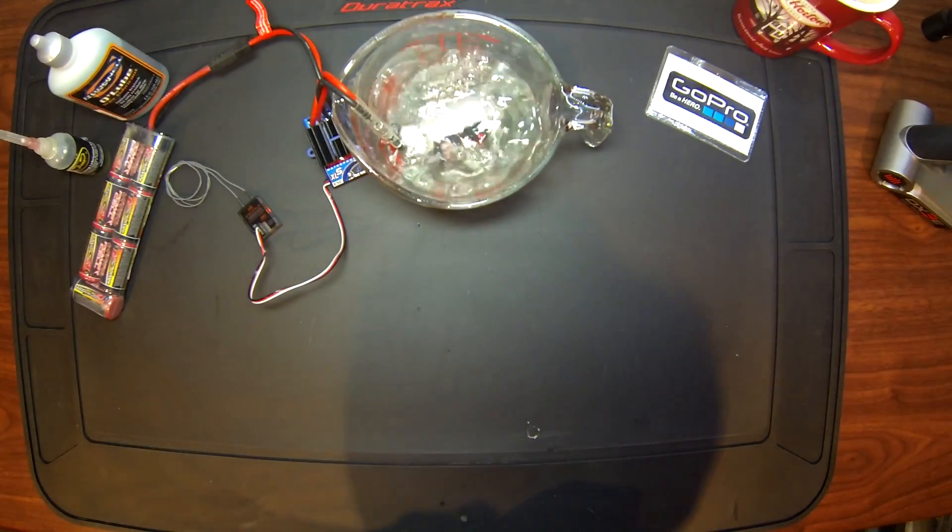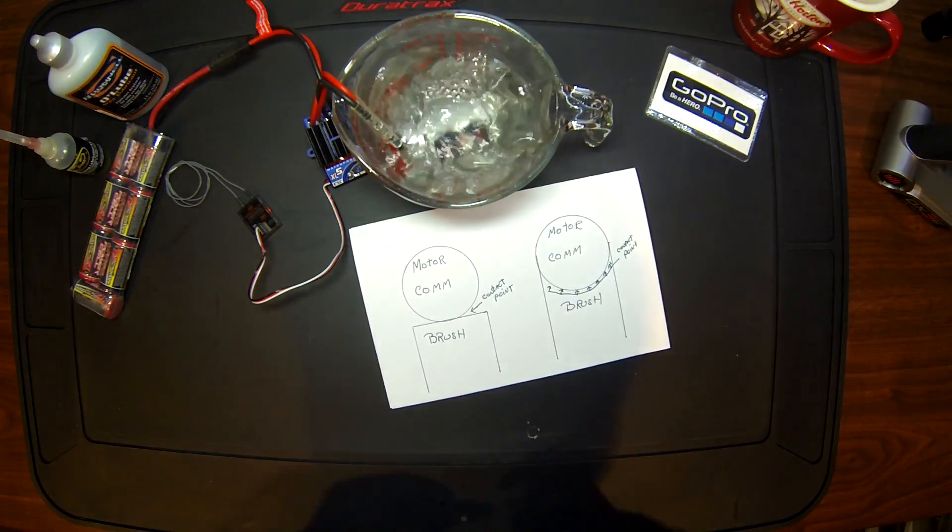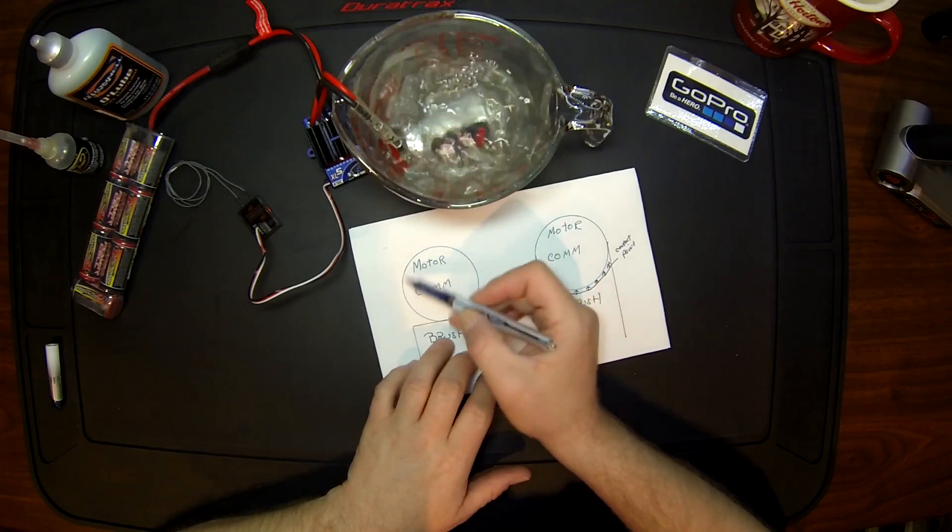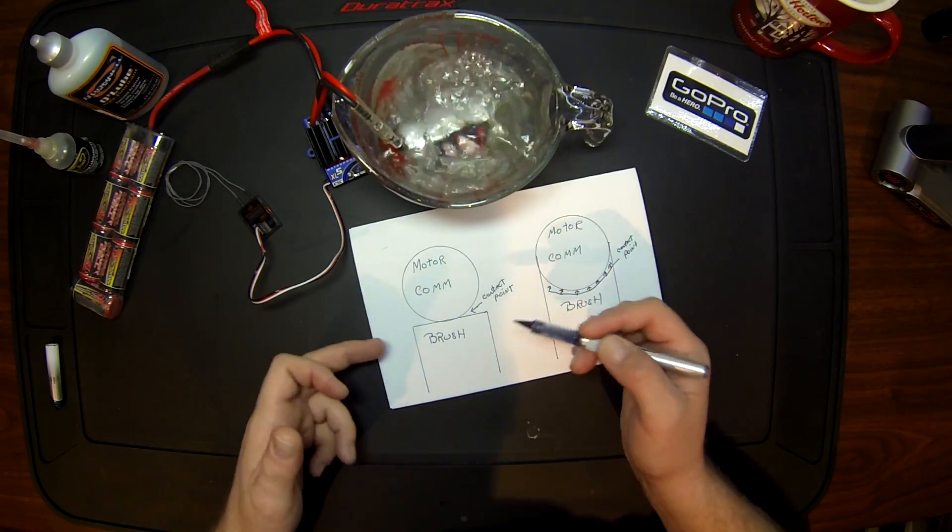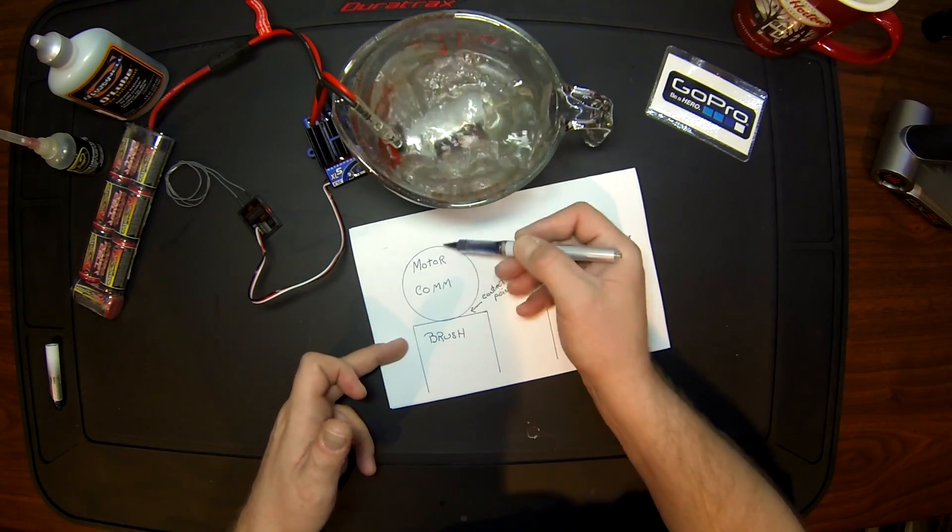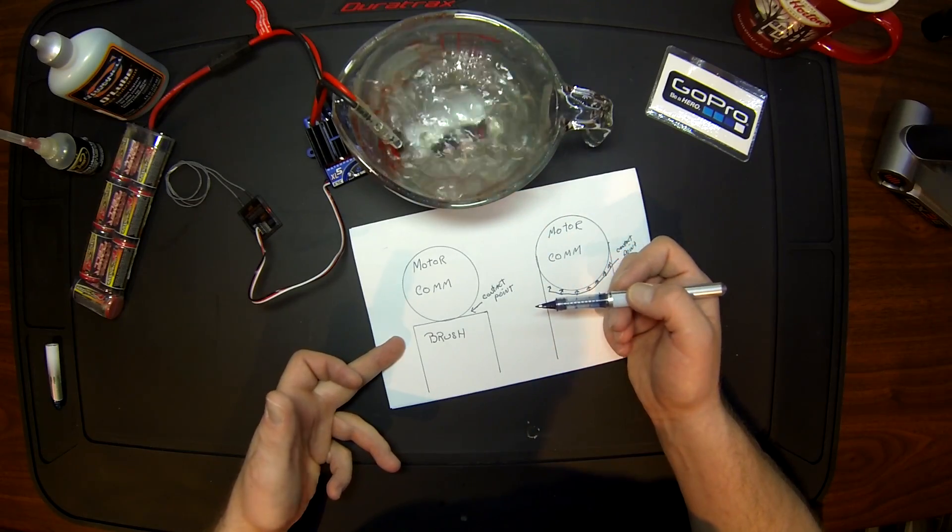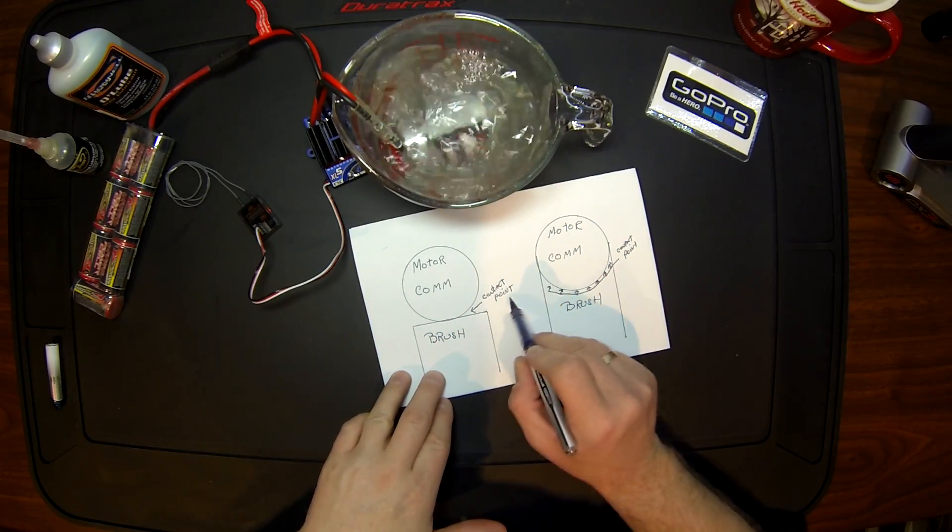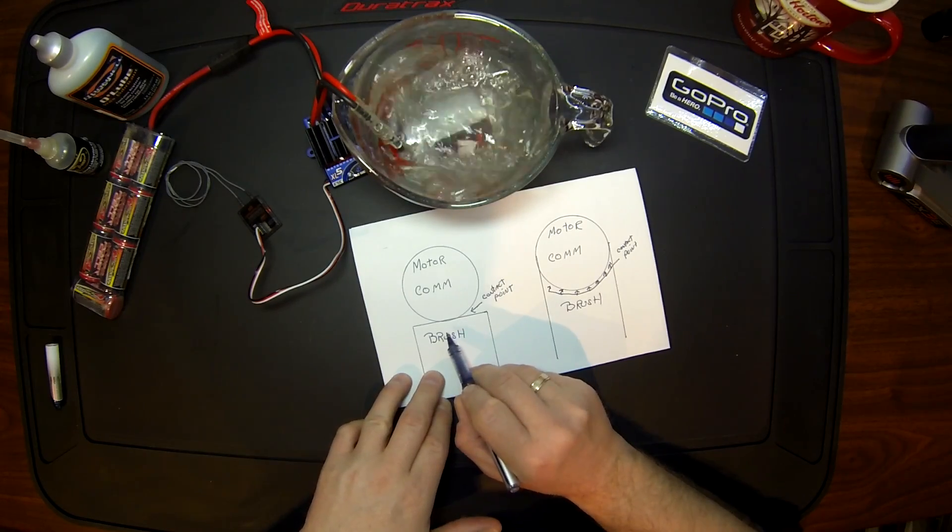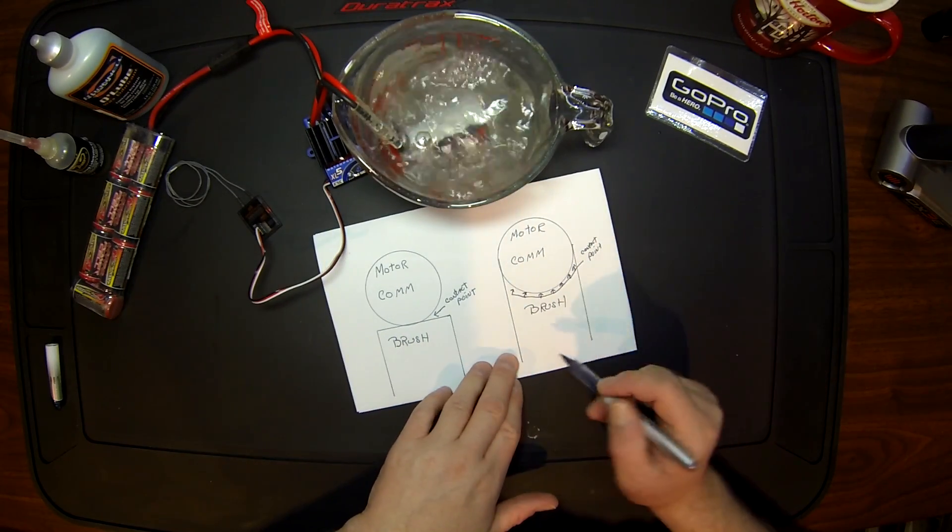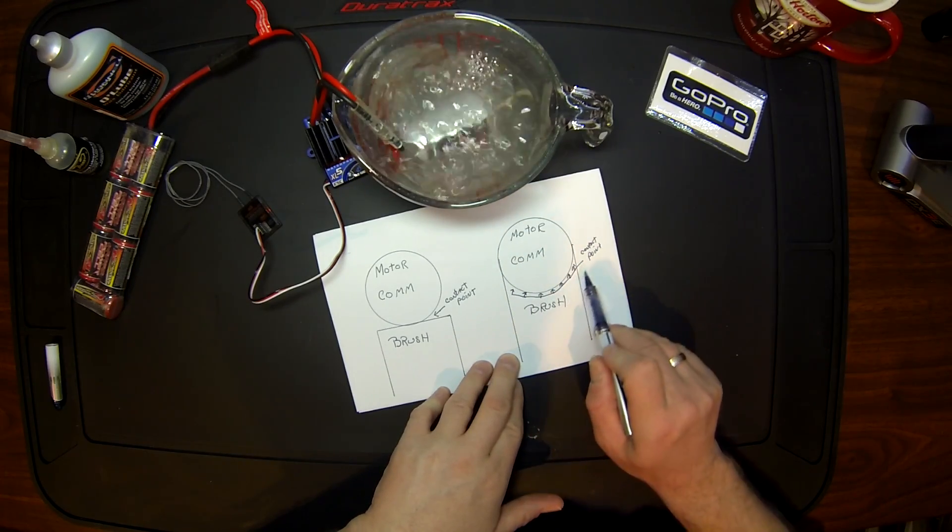To explain why you do a break-in, very easy. Here you have your motor comm, your main shaft of your motor, and here you have your brushes. Your brushes on each side of the comm are square. When you do your break-in, simple reason: you've got contact points right here. You have a small contact point.